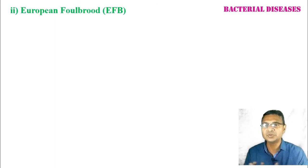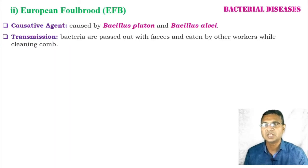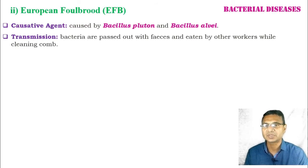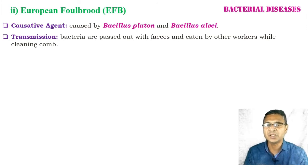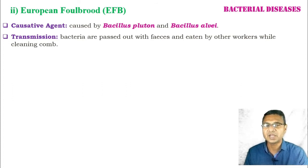After American Foulbrood, we move to European Foulbrood, caused by Bacillus pluton and Bacillus alvei. It is transmitted from one member to another in the colony by the fecal matter of infected bees, and during cleaning of the colony, the fecal matter is eaten by other worker bees.